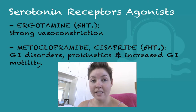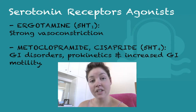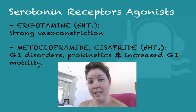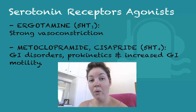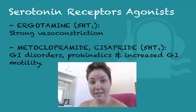Other serotonin agonists which aren't really used are the following. A serotonin 2 receptor agonist could be LSD. Serotonin 3 receptor agonists have no clinical use. Serotonin 4 receptor agonists are metoclopramide or cisapride. These are dopamine 2 antagonists and they're used for GI disorders, as prokinetics to increase motility.